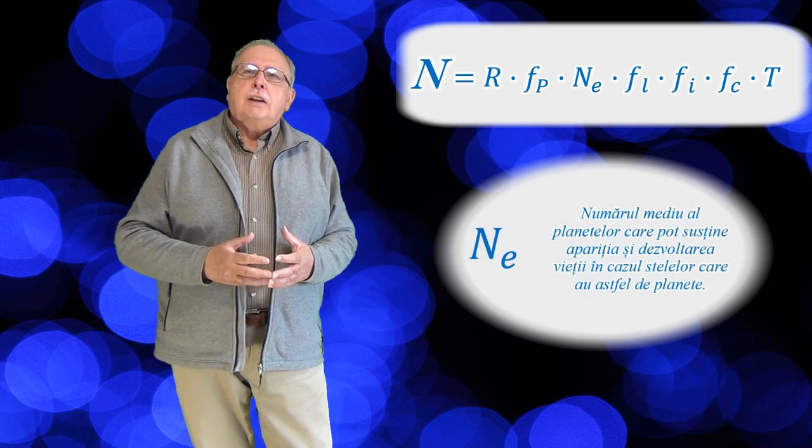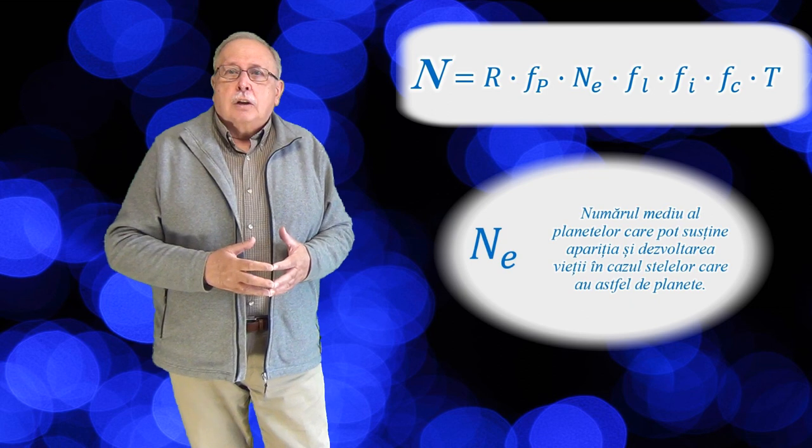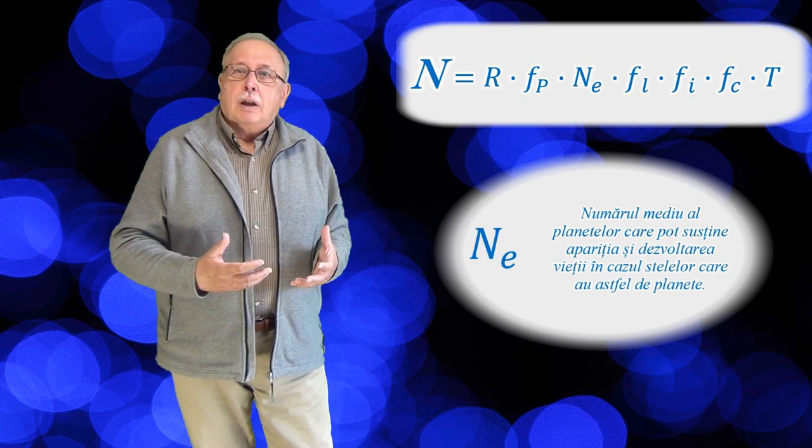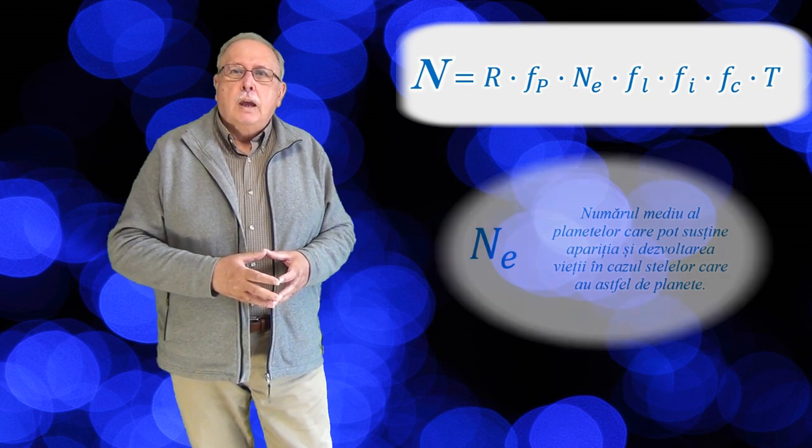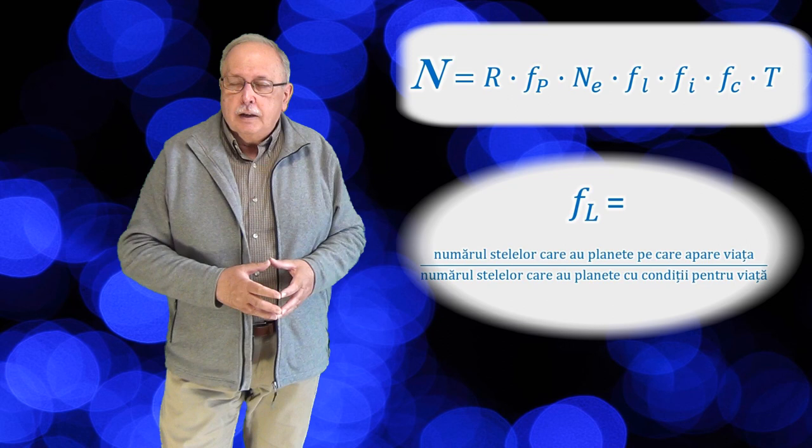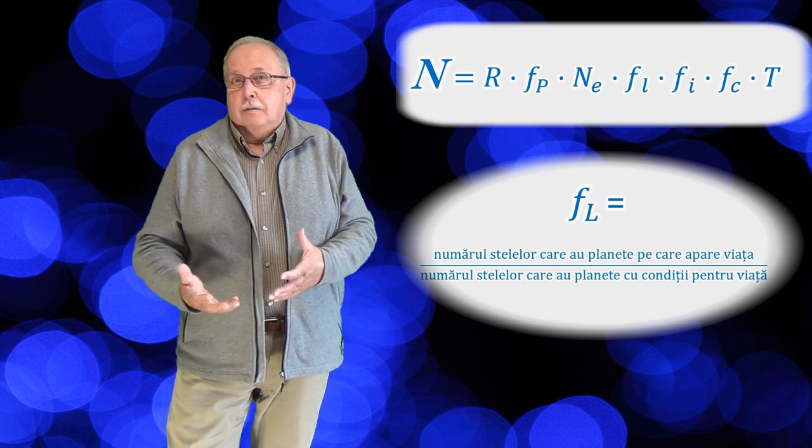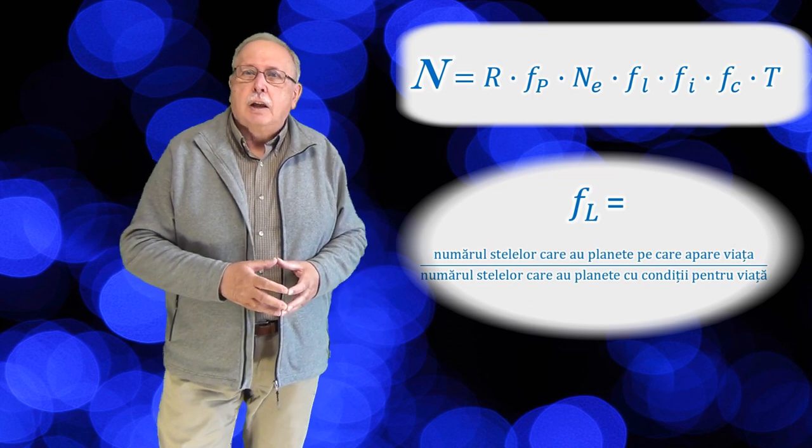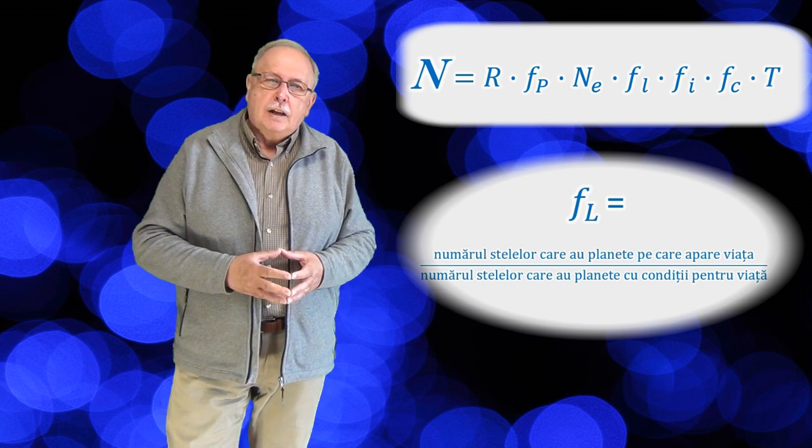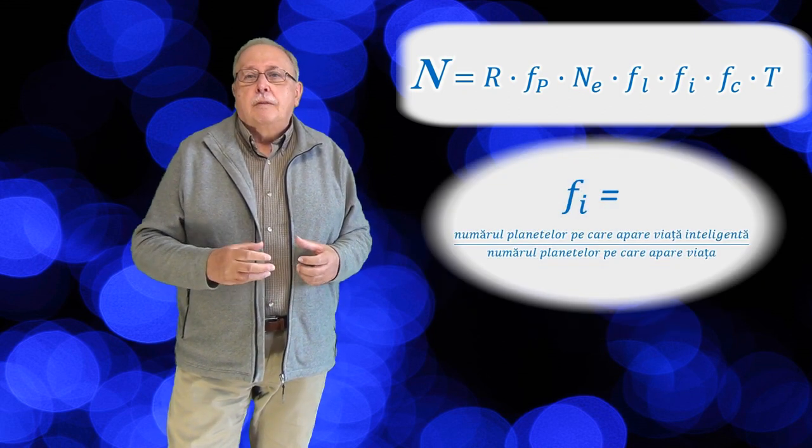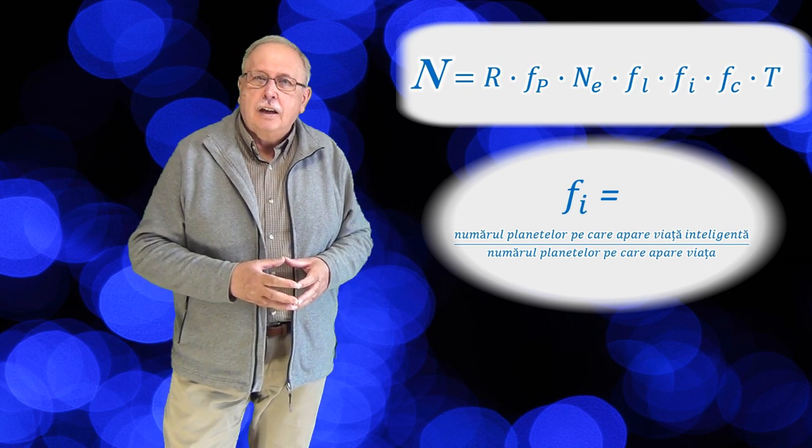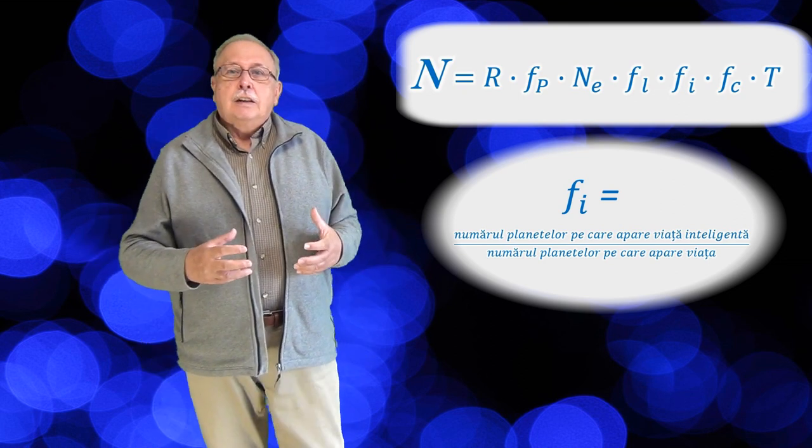N indice E este numărul mediu de planete care pot susține viața în cazul stelelor care au planete, evident, adică în cazul stelelor care au planete, câte dintre aceste planete pot susține viața. FL este fracțiunea planetelor pe care apare viața din planetele care pot susține viața, pentru că o planetă poate să susțină viața în principiu și totuși viața să nu apară pe planeta respectivă. Deci este raportul dintre planetele pe care apare viața și planetele care pot susține viața. F indice I este fracțiunea din planetele pe care apare viața a planetelor pe care apare viață inteligentă și civilizație. Pentru că nu-i suficient să apară viață. Trebuie să apară viață inteligentă.